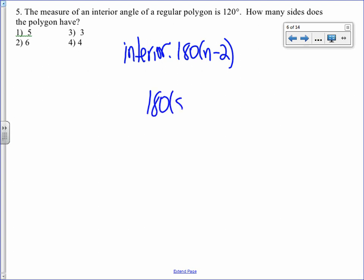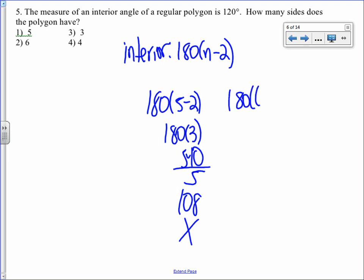180 times 5 minus 2 would be 180 times 3 which is 540. To find just 1 we divide it by the number of sides and we get 108. That's not the answer. Next I'll try 6 sides. 180 times 6 minus 2 is 180 times 4 which is 720. To find just 1 we divide by the number of angles and we get 120. That's our answer.